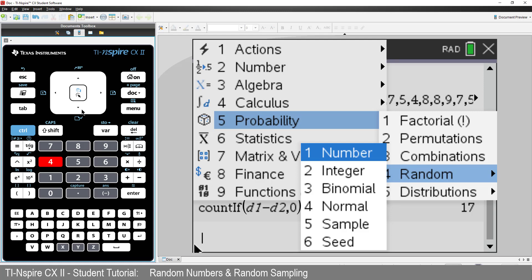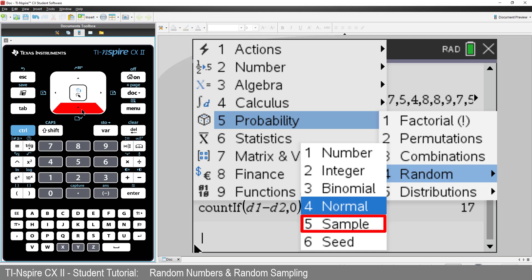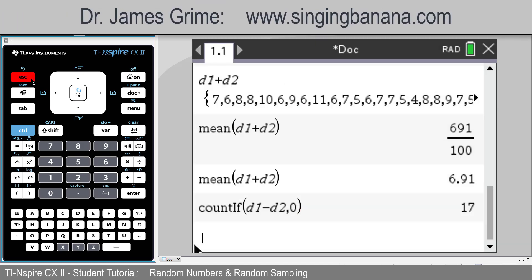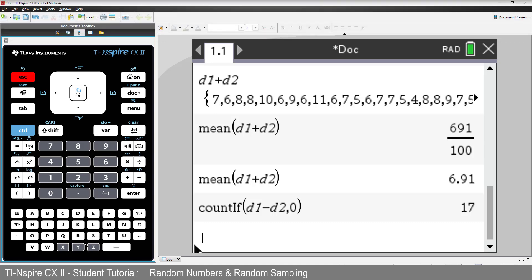Other options in the random menu include normal and binomially distributed samples. Let's have a look at the second last item, random sample, to investigate another problem. A wonderful mathematician by the name of Dr. James Grime invented a set of dice with some unusual characteristics. We can use the sample command to help explore these unusual dice.